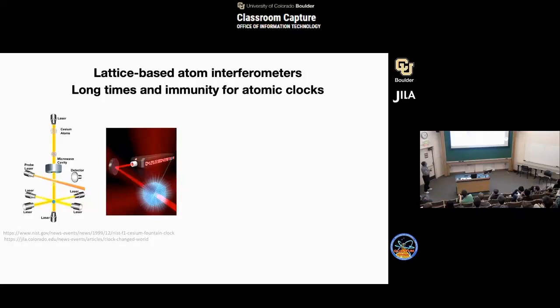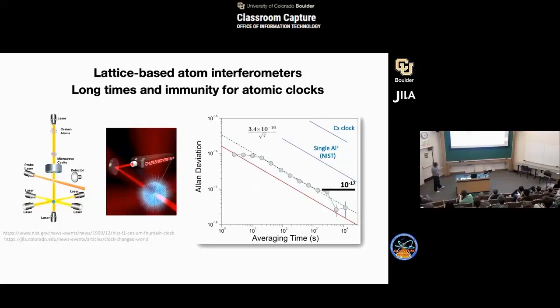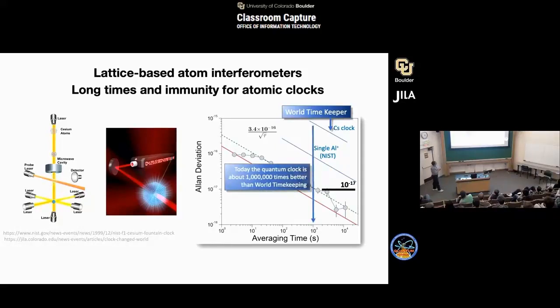The same ideas that went into pushing the generation of clocks to where we are today can be thought of in terms of this inertial sensing problem. This is a picture of the NIST F1 fountain clock. This is how time is measured. You have some atoms which you push up in a fountain. They go through a microwave cavity and come back and go through the microwave cavity again and do Ramsey spectroscopy, which allows us to read out an oscillation between a microwave transition in cesium. The combination of this and the hydrogen maser is how clocks are built.